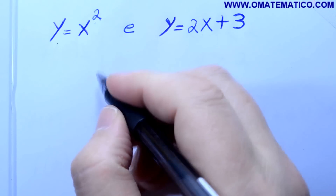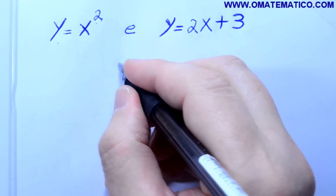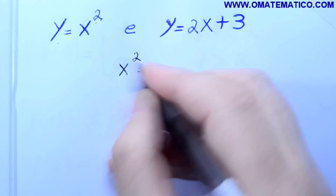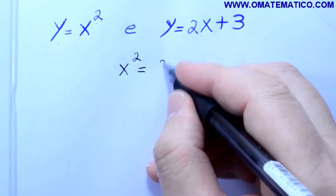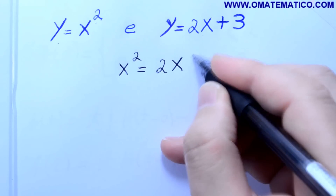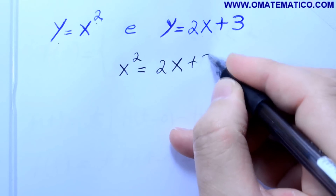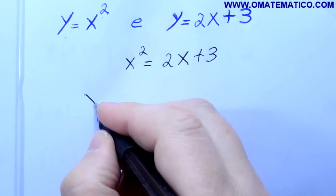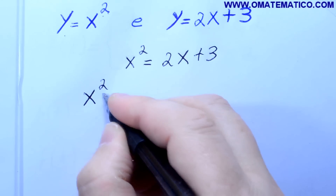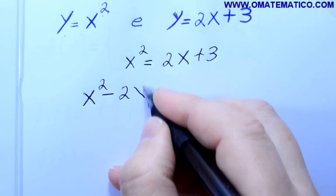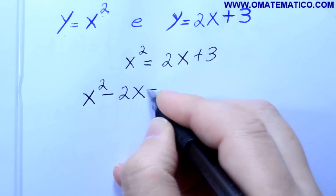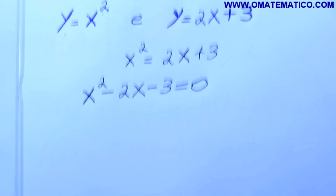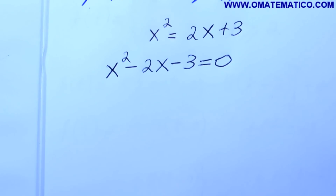Fazendo então a interseção, eu tenho que igualar x ao quadrado — que é esse aqui — igual a 2x mais 3. Passa o 2x para cá, vai dar x ao quadrado menos 2 vezes x menos 3 igual a zero. Isso aqui é uma equação de segundo grau.